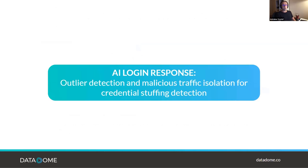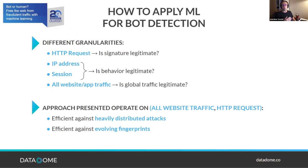Now a use case: a machine learning approach we call AI Login Response, specialized in detecting heavily distributed credential stuffing attacks — attacks on login endpoints where each IP makes very few requests. It is a combination of outlier detection and malicious traffic isolation, specialized for credential stuffing.